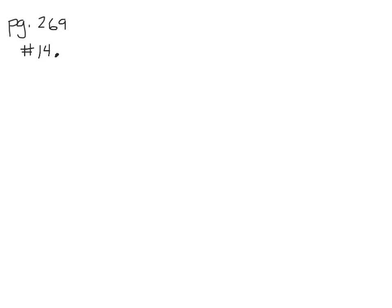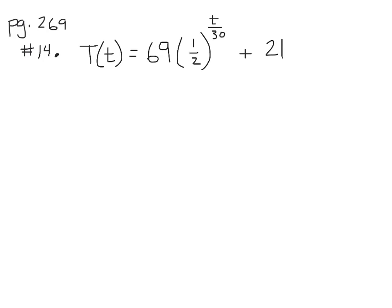Question 14 on the same page is about a hot cup of coffee that cools according to an equation where capital T is the temperature in degrees Celsius and little t is the time in minutes. Question A: which part indicates exponential decay? The base is less than 1 — specifically one-half — and when the base is less than 1, it is exponential decay.